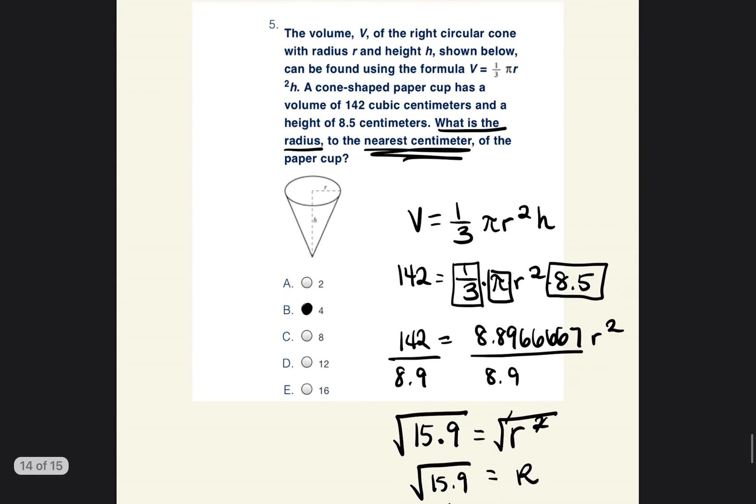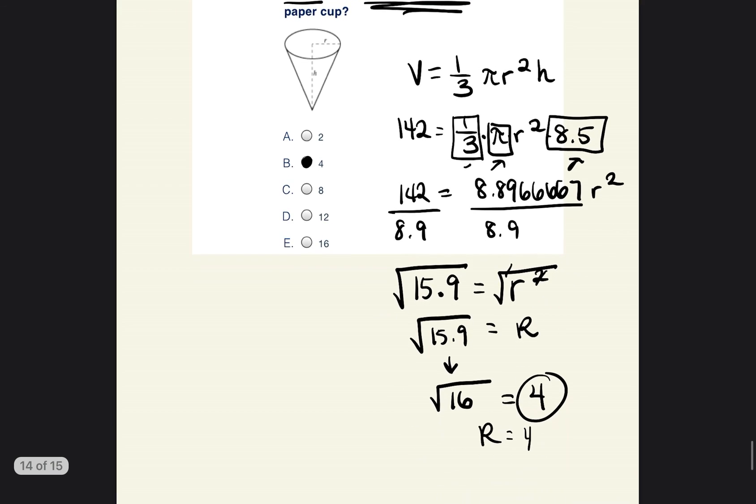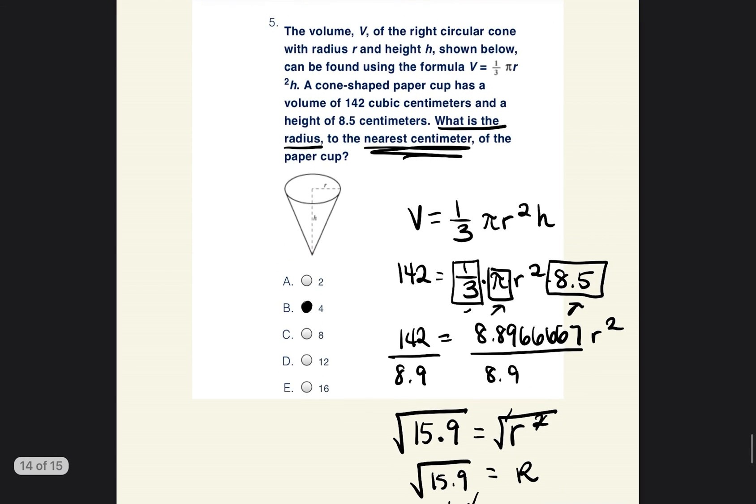So again, if you get a problem like this on your test, then just go ahead and multiply whatever it is that you can multiply out. After you were able to multiply it out, you want to get the R by itself. So we get rid of by dividing from both sides. And then we found the square root. We estimated because it's just easier that way. And remember, when we're test taking, it's all about doing whatever is easiest. So we found the square root of 16, and then that was equal to 4. And that's how we got that answer.